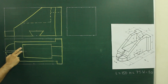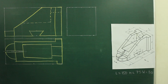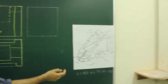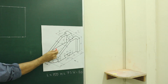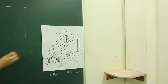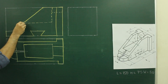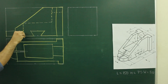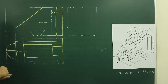Now due to this slot, we will have one dotted line in the front view. When you see from here, you won't be able to see the line which is going through and through, so from here we will draw a dotted line. Now we will draw the side view.